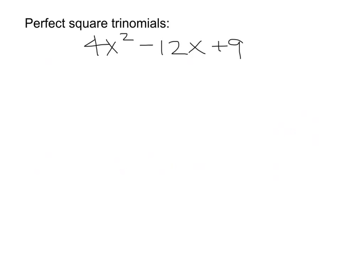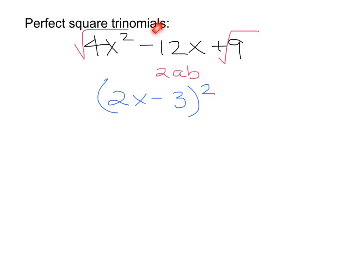Now we are going to talk about perfect square trinomials — also a review. For it to be a perfect square trinomial, you should be able to take the square root of the first term, the square root of the last term, and the middle term is 2 times a times b. Take the square root of 4x squared and you get 2x; take the square root of 9 and you get 3. Bring down the minus sign, put parentheses around it, and square it. To verify: 2 times 3 times 2 gives me 12, confirming it is a perfect square trinomial.